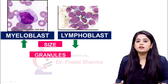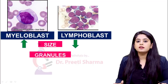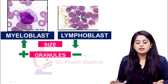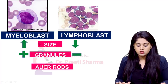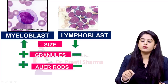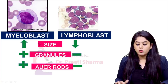From cell size, now let's go to the interior. Which cell is showing granules? Remember, everything goes in favour of a myeloblast. So granules will be seen in the myeloblast — they will not be seen in a lymphoblast. Now when many of these granules combine, it results in the formation of something known as an Auer rod. Which blast is going to show an Auer rod? Everything in favour of myeloblast — so myeloblast will show Auer rods, lymphoblast will not.